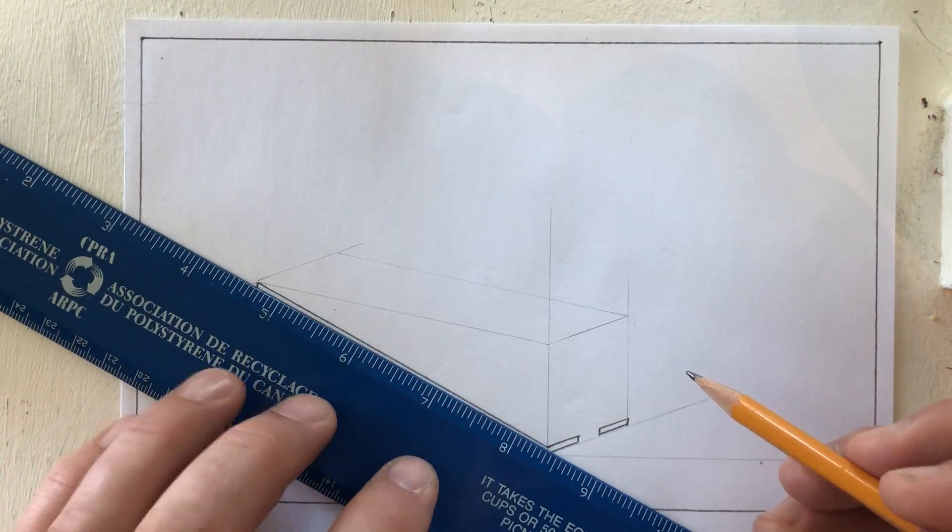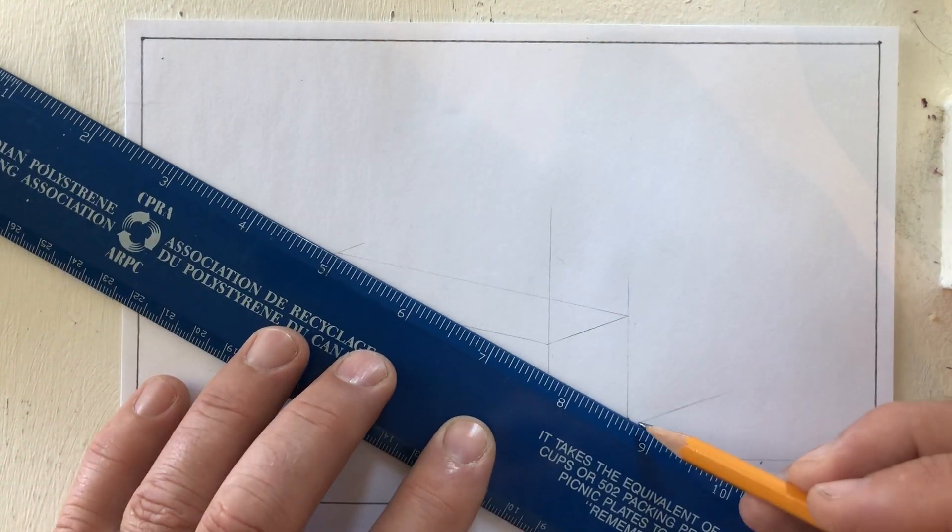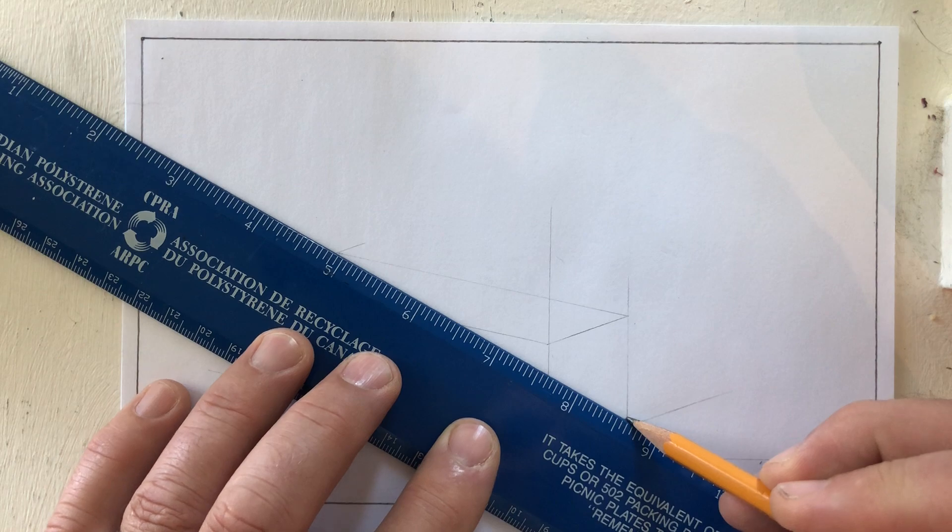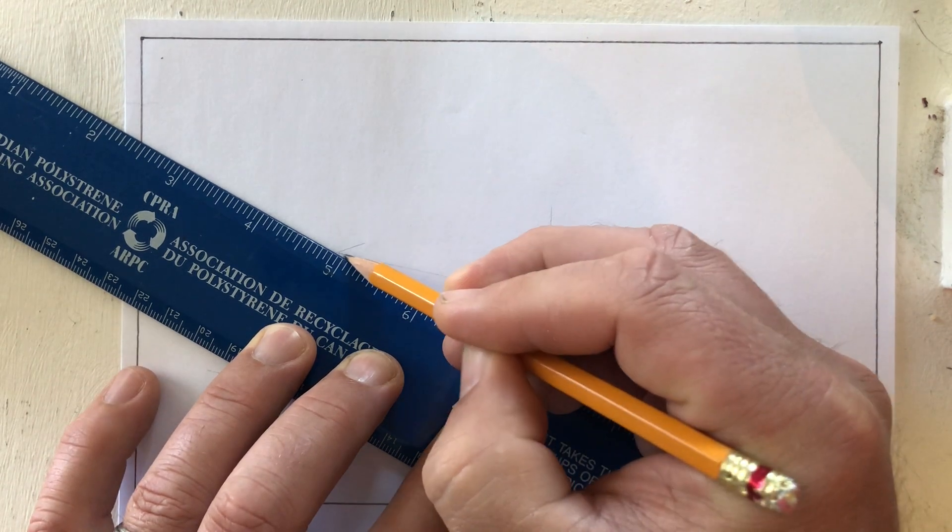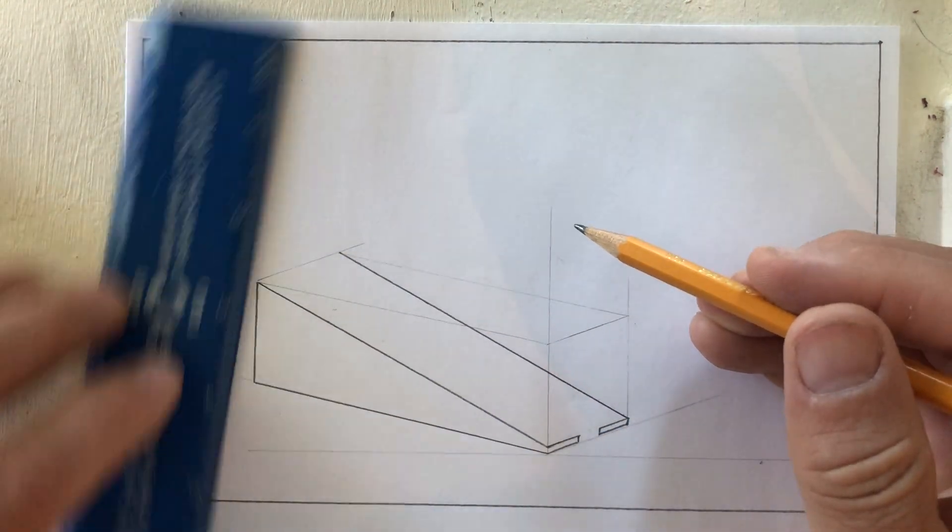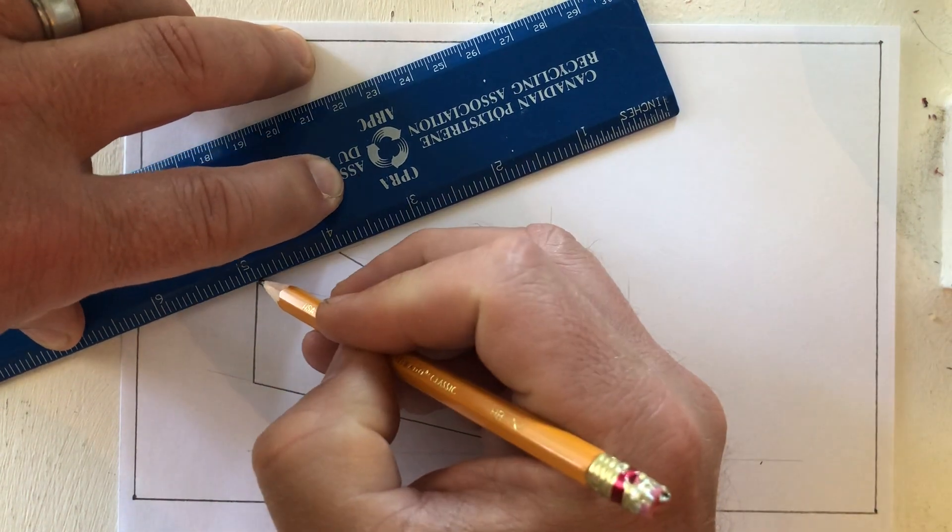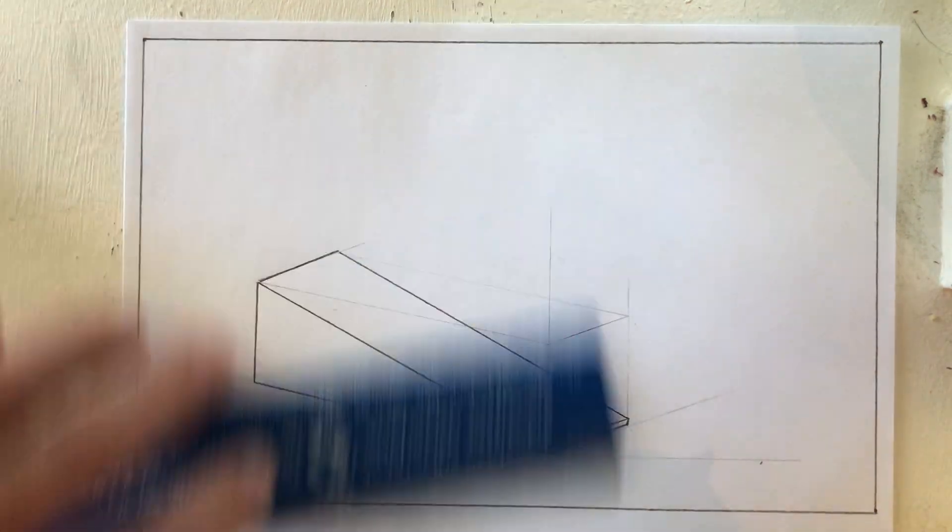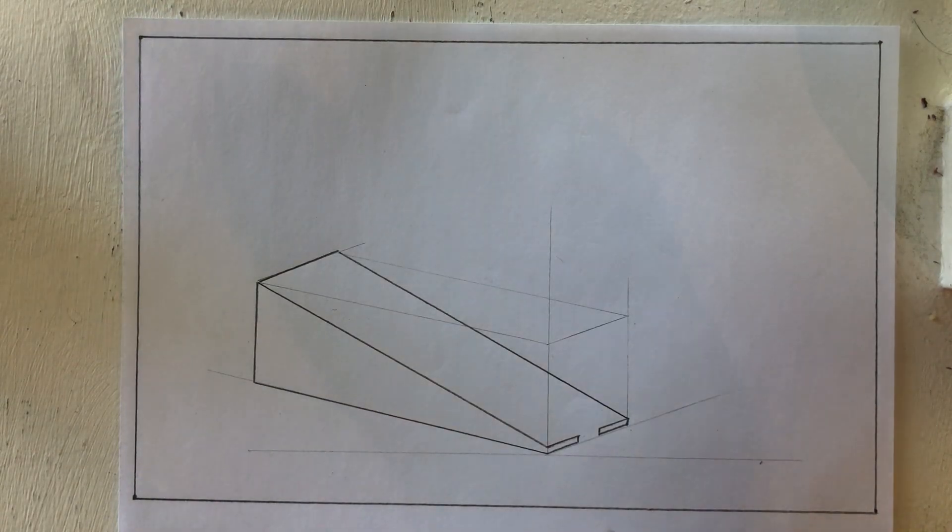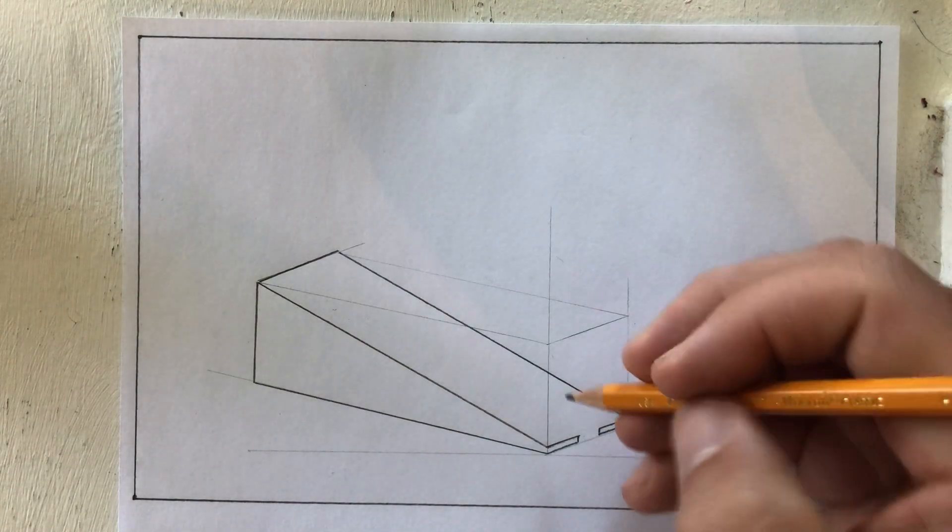So the far side of the wedge comes down exactly the same as this side. If I connect that to that and then I connect this back edge, we're seeing what looks like a wedge. Now we have a little space left here that we're unsure about.